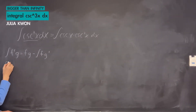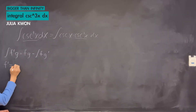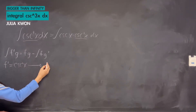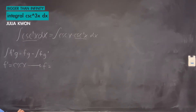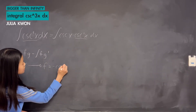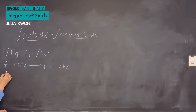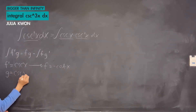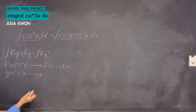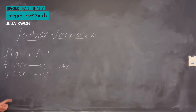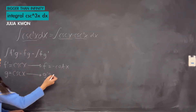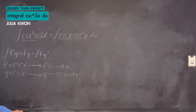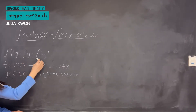We're going to set f prime equal to cosecant squared x, which gives us f equal to negative cotangent x. We're going to set g equal to cosecant x, which gives us g prime — the derivative of cosecant x — which is negative cosecant x times cotangent x. Using what we found, we're going to put everything into this equation.